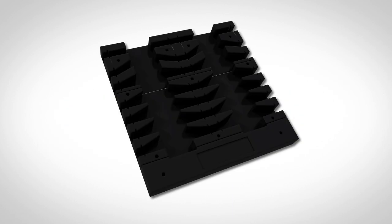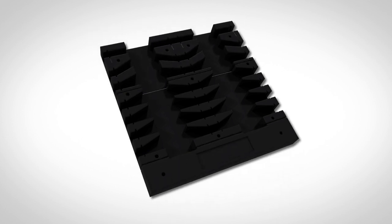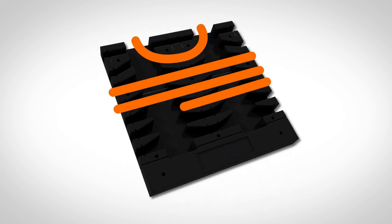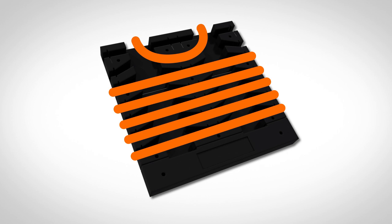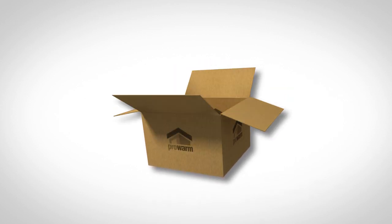The ProWarm Overlay End Support has multiple snapping points, which enables a more flexible approach to underfloor heating installation. Unlike other manufacturers' end returns, it holds up to five runs of pipe in place around the perimeter without the need for additional pipe clips.